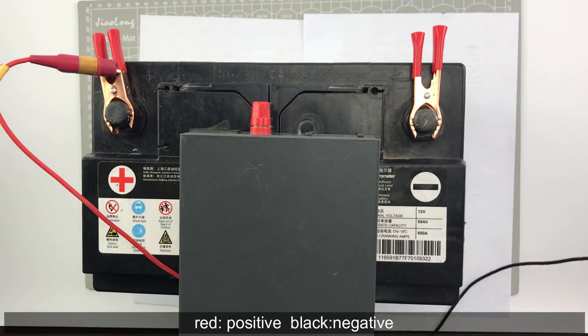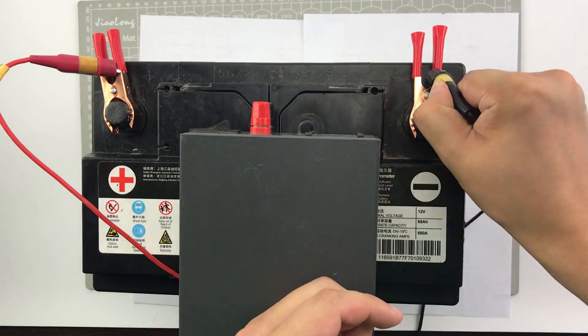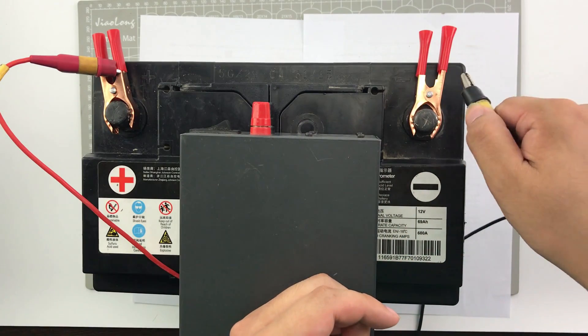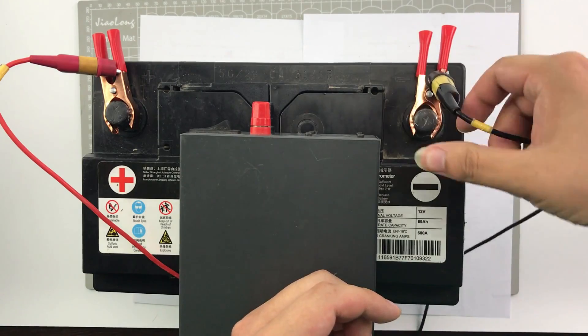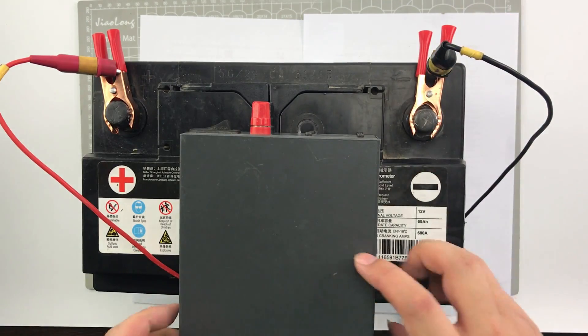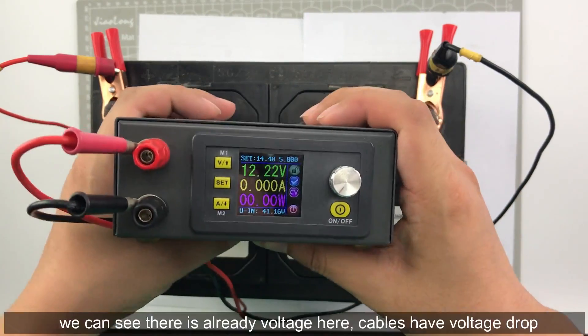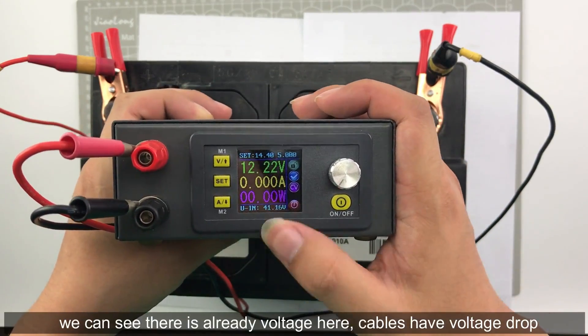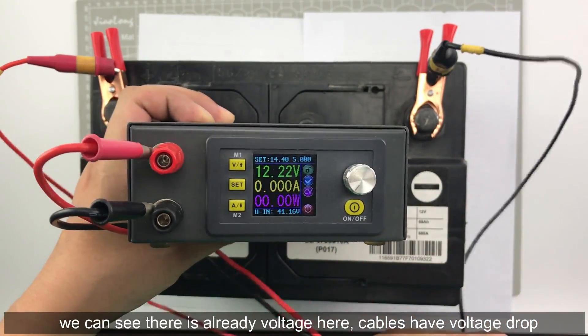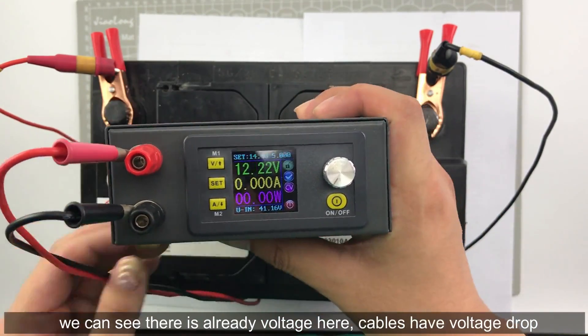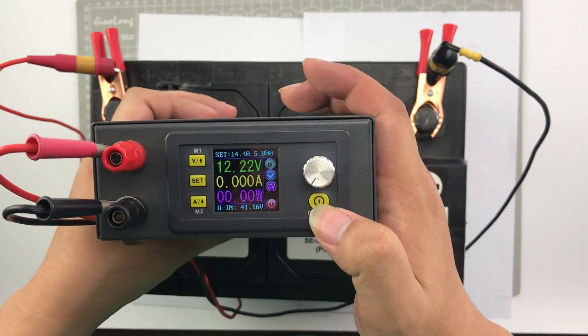And black, negative. You can see there is already voltage here, and this is because the cable has voltage drop, and we turn on the power.